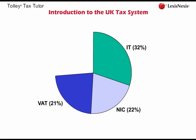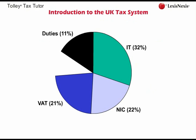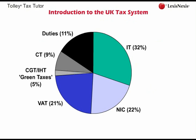Income tax, VAT, and National Insurance are the three most important taxes as far as raising money is concerned, making up 75 percent of total government revenue. A large part of the remainder — 11 percent — is made up of duties, which are taxes on alcohol, petrol, and tobacco, as well as certain levies on goods coming into the UK. Corporation tax makes up about 9 percent of total government revenue, being the tax paid by UK companies on their taxable profits.